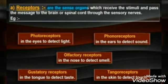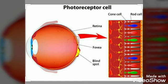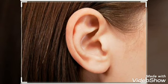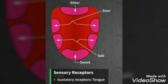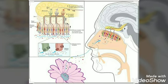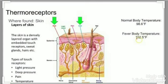Some of these receptors are: photoreceptors, which are sensitive to light — that means they will collect light as a stimulus; phonoreceptors, which are sensitive to sound; gustatory receptors, which are sensitive to taste; olfactory receptors, which are sensitive to smell; and thermoreceptors, which are sensitive to touch.